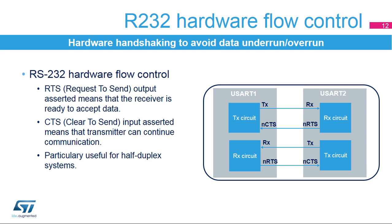In RS-232 communication, it's possible to control the serial data flow between two devices by using the NCTS input and the NRTS output. These two lines allow the receiver and the transmitter to alert each other of their state. The following figure shows how to connect two devices in this mode. The idea is to prevent dropped bytes or conflicts in case of half-duplex communication. Both signals are active low.